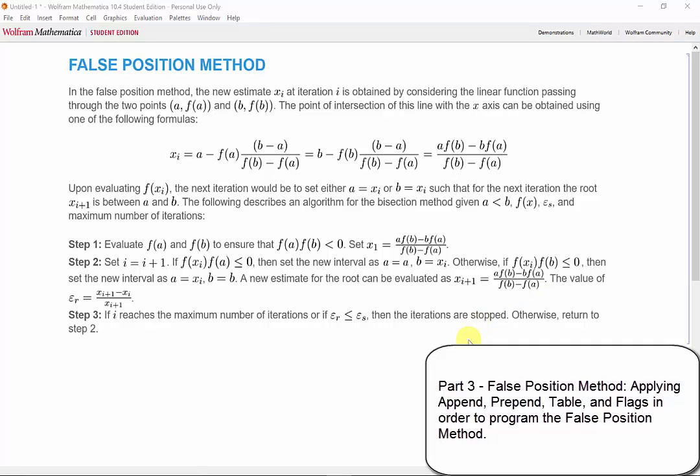In the previous video, we programmed the bisection method. Now, let's figure out how we can program the false position method.